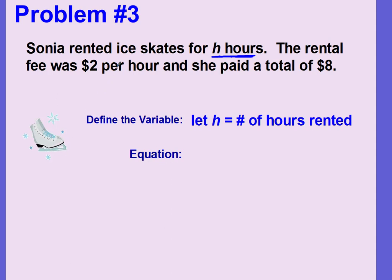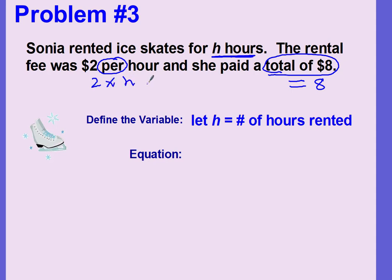Now write your equation. We see that she paid a total of $8 — this is your equals amount, so it's going to equal 8. What equals 8? The cost of renting the skates. We know it's $2 per hour, and 'per' means to multiply. So your equation is 2h equals 8, which means 2 times h equals 8.